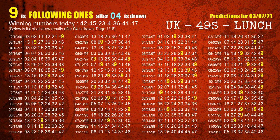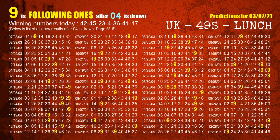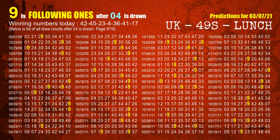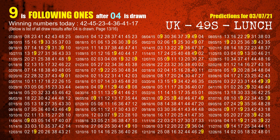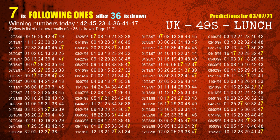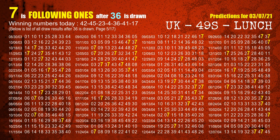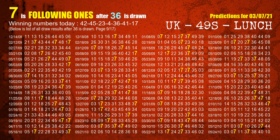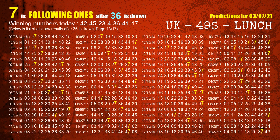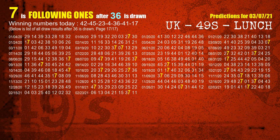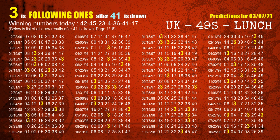The fourth winning number is 04. The most frequently following units digit is 9 when 04 is the winning number in the last draw. The fifth winning number is 36. The most frequently following units digit is 7 when 36 is the winning number in the last draw. The sixth winning number is 41. The most frequently following units digit is 3 when 41 is the winning number in the last draw.